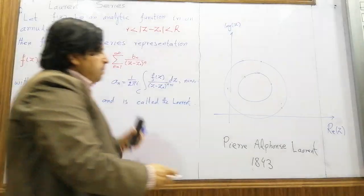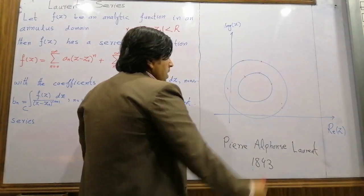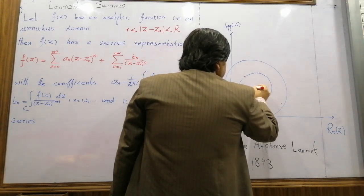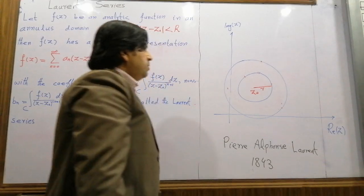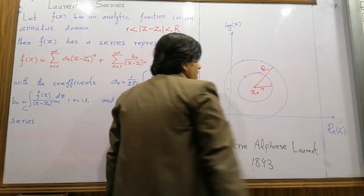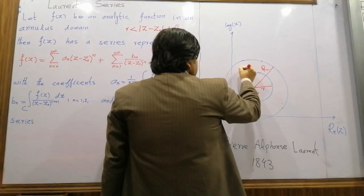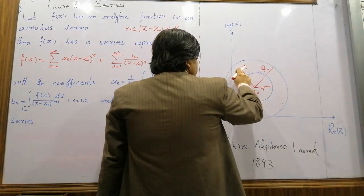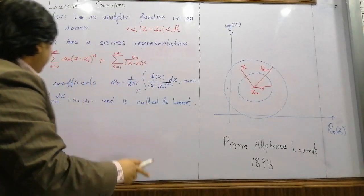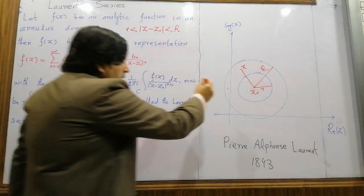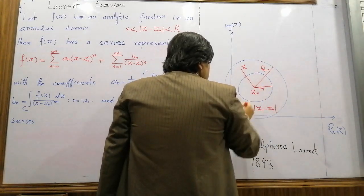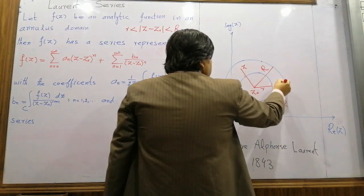Let us see from the diagram in which we have two circles. This is the smaller one, with center z₀ and radius small r. The radius of the other circle is capital R. If there is any point z, then the function f(z) at this point z can be expressed in this form — in other words, |z − z₀| is between small r and capital R.